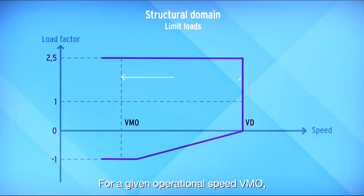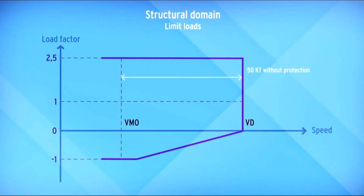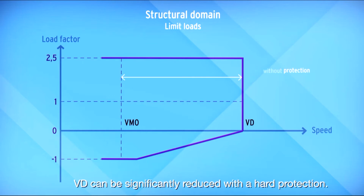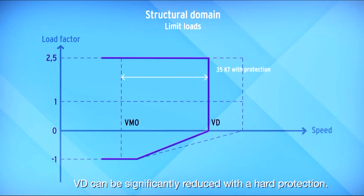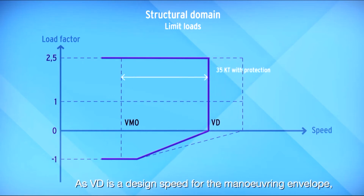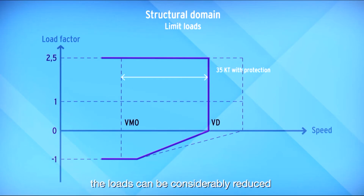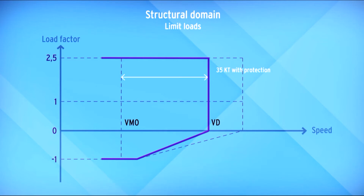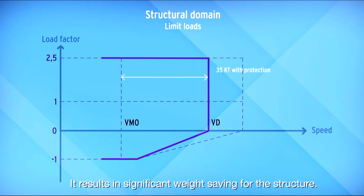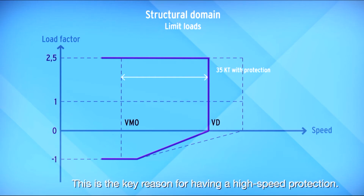The margin between VMO and maximum speed is reduced, and usually less than 35 knots on an Airbus. For a given operational speed VMO, VD can be significantly reduced with a hard protection. As VD is a design speed for the maneuvering envelope, the loads can be considerably reduced because they are a function of V squared, resulting in significant weight saving for the structure. This is the key reason for having a high-speed protection.